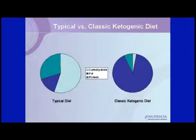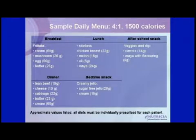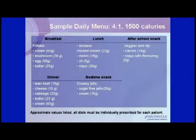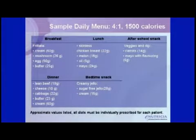Here is a sample daily menu for the classic ketogenic diet. Breakfast could include an egg frittata — a mix of egg, butter, and cream, maybe with a small portion of vegetable mixed in. Lunch could be a skinless chicken breast with a good serving of mayo and oil added for fat. An after-school snack could be veggies and dip with a small amount of carrot and a larger amount of mayo with some flavoring.